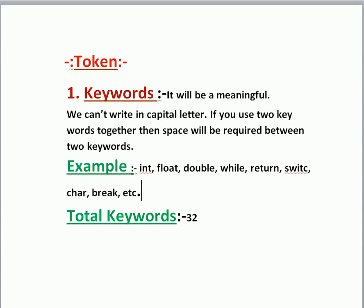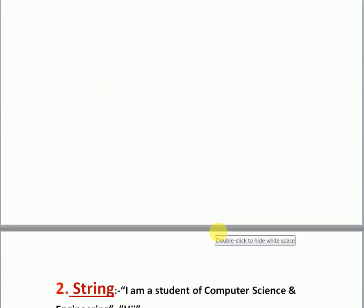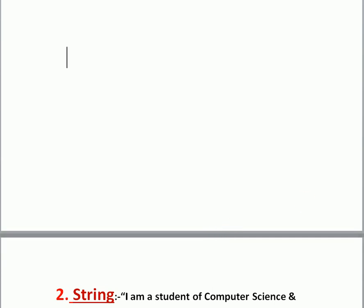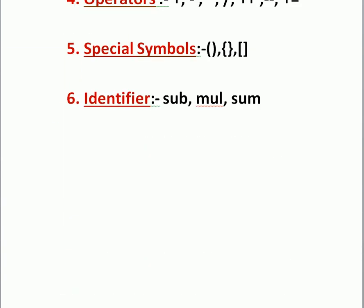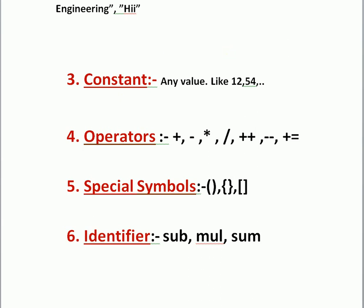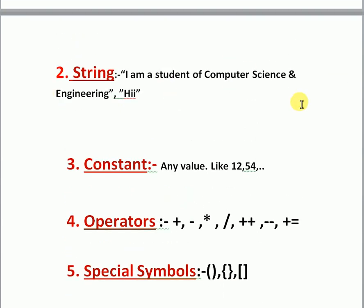The next token is string. What is a string? In my previous video I wrote a line — 'I am a student of computer science and engineering' — and that was a string printed. Anything you write inside quotation marks is a string: 'hi', 'hello', etc. Anything inside quotation marks is a string constant.